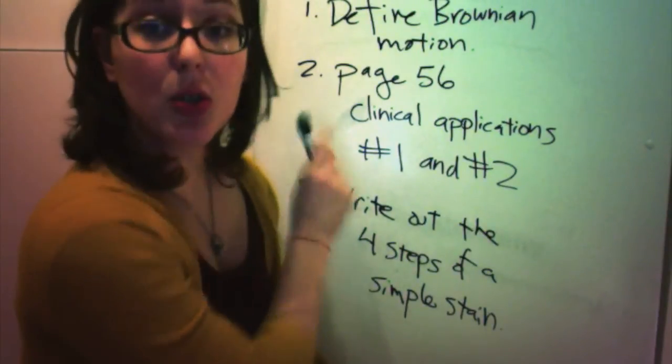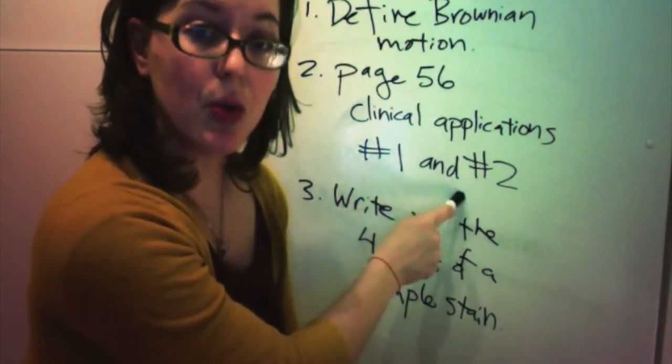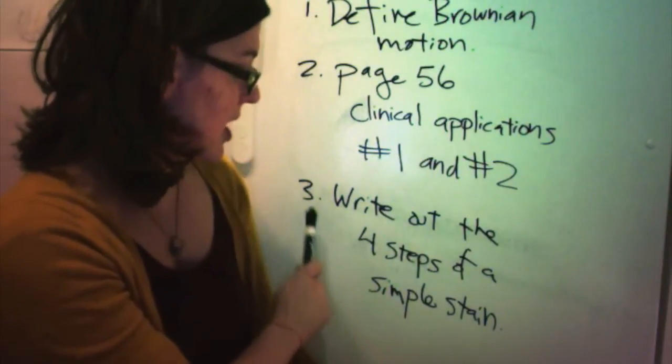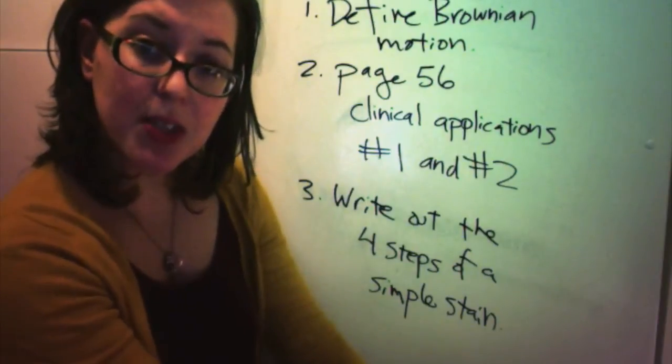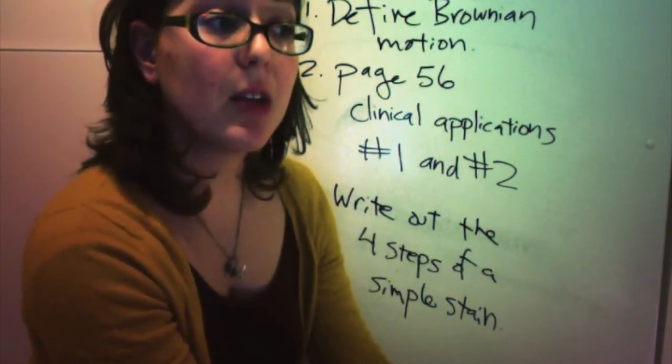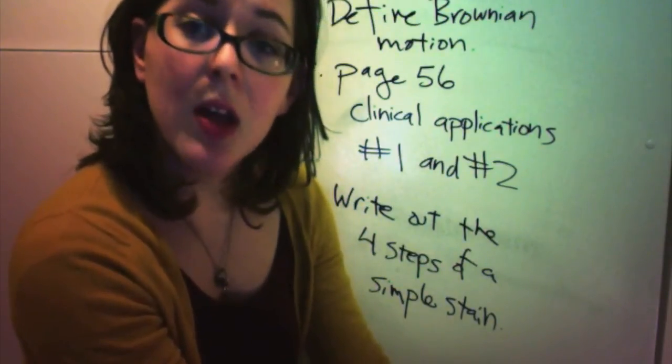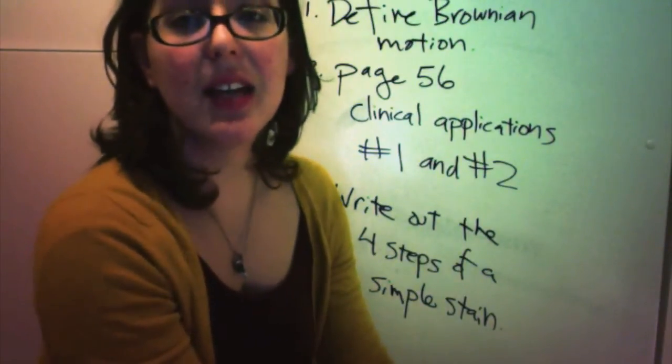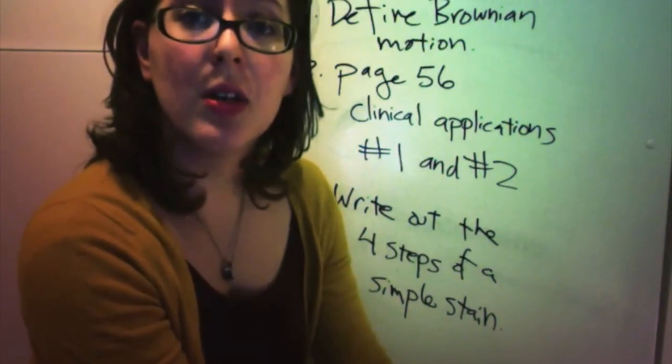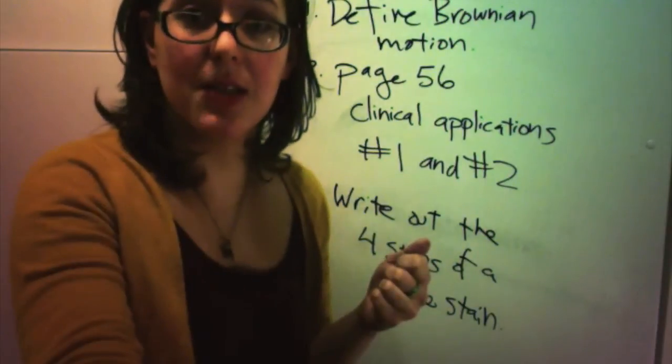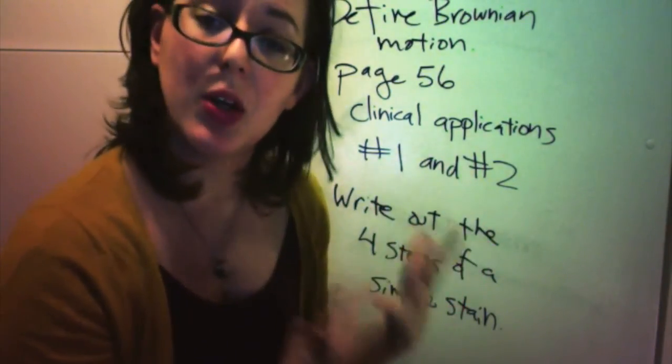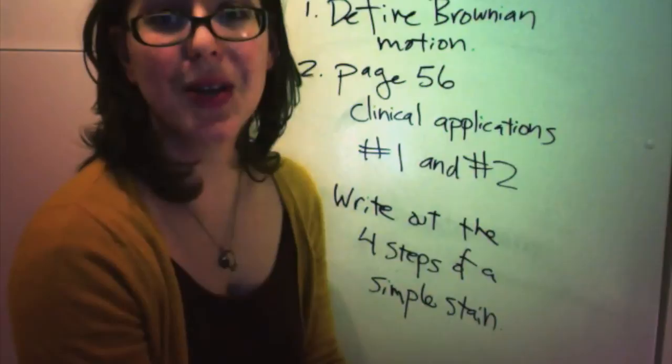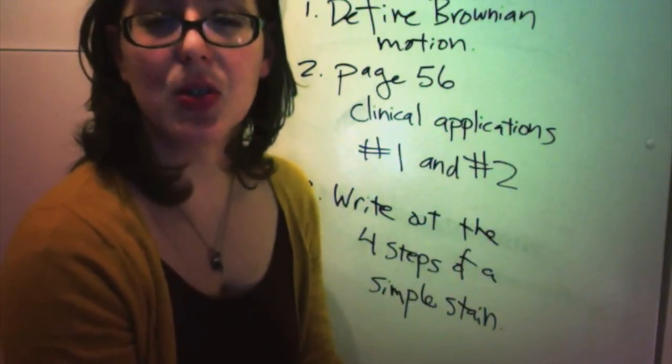So, I want you to write out just a few sentences or a small paragraph defining what Brownian motion is. Then, I want you to answer two questions, questions one and two, under the clinical application section on page 56 for the simple stain. And then, I want you to write out the four steps to a simple stain that I talked about in this video. I would like for you to write it out with a little bit of detail. Basically, you're writing this out to me to show me that, well, one, you've watched the video. And then, secondly, that next week when we go to do our stain that you already have this protocol, this little recipe of exactly what you're going to be doing. So, you should be able to read it and just do your experiment from what you wrote. So, it will make it clearer for you and just to make sure that you understood what we're doing.